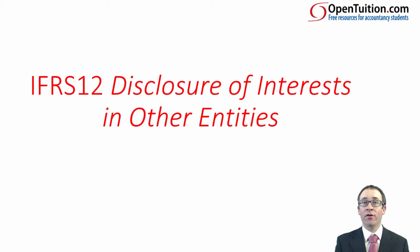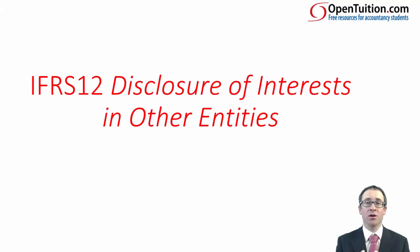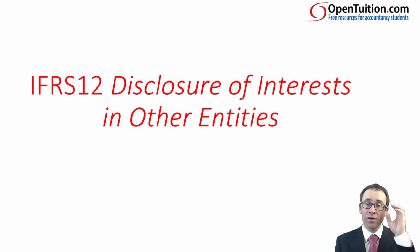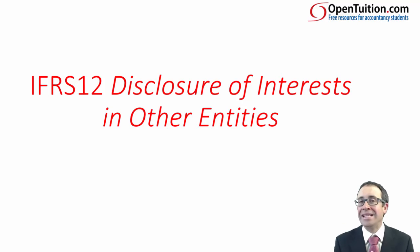We're now going to look at IFRS 12, which is an accounting standard. The reason we're looking at it within the groups part of the syllabus is because it's a standard that relates directly to groups. We've seen recently that there have been lots of standards introduced relating to disclosure — IFRS 7 looks at financial instruments disclosure, IFRS 8 looks at operating segments disclosure, and IFRS 12 looks at disclosure you make with regards to interest in other entities.